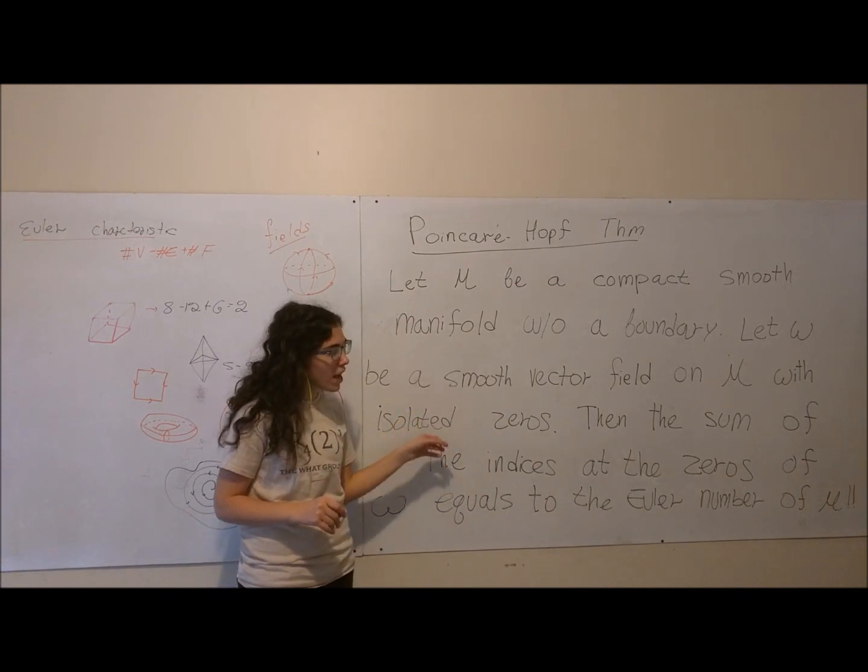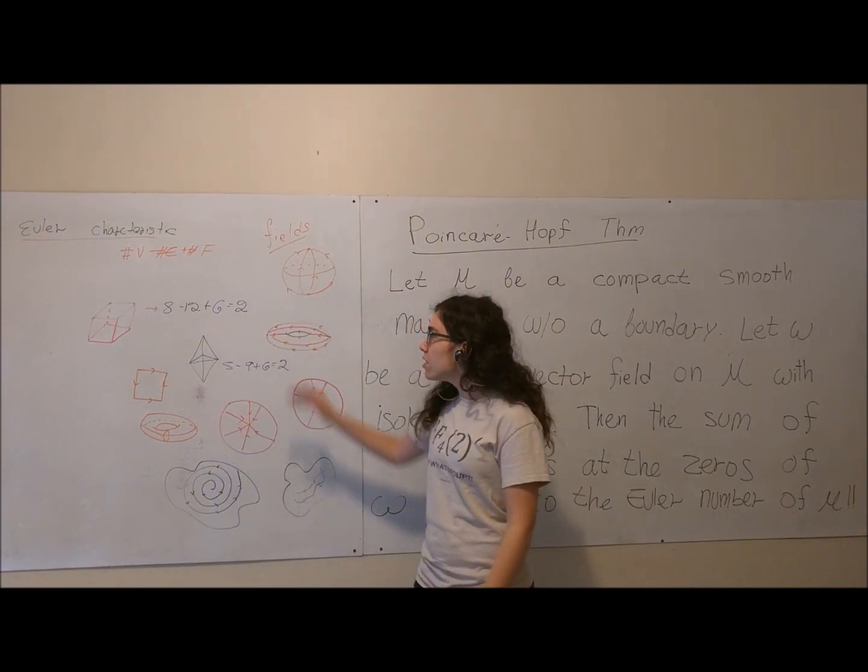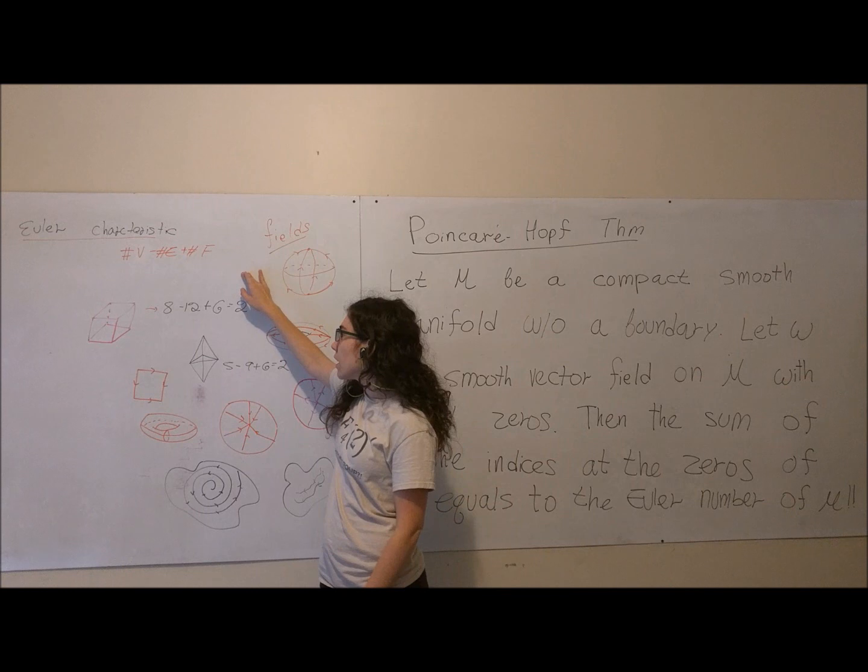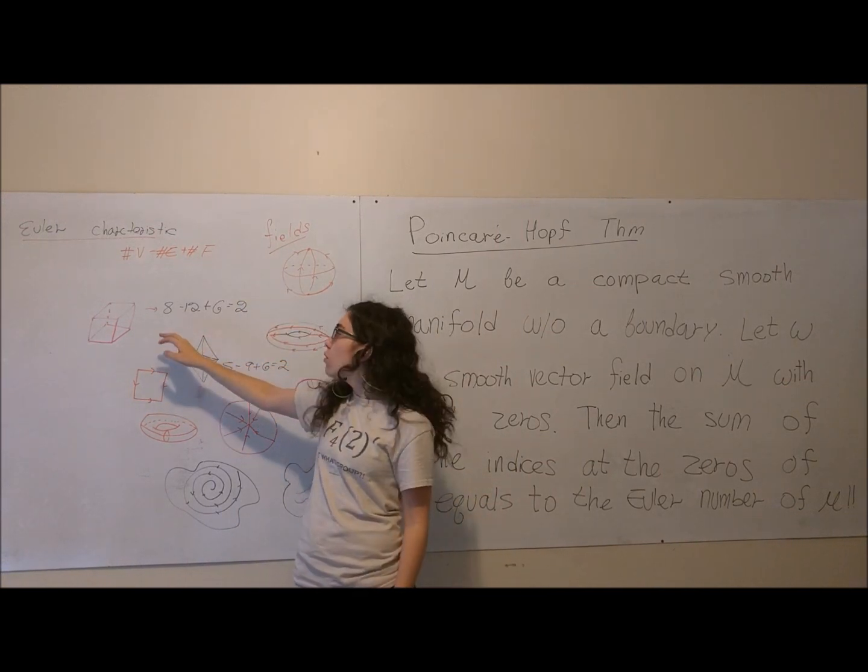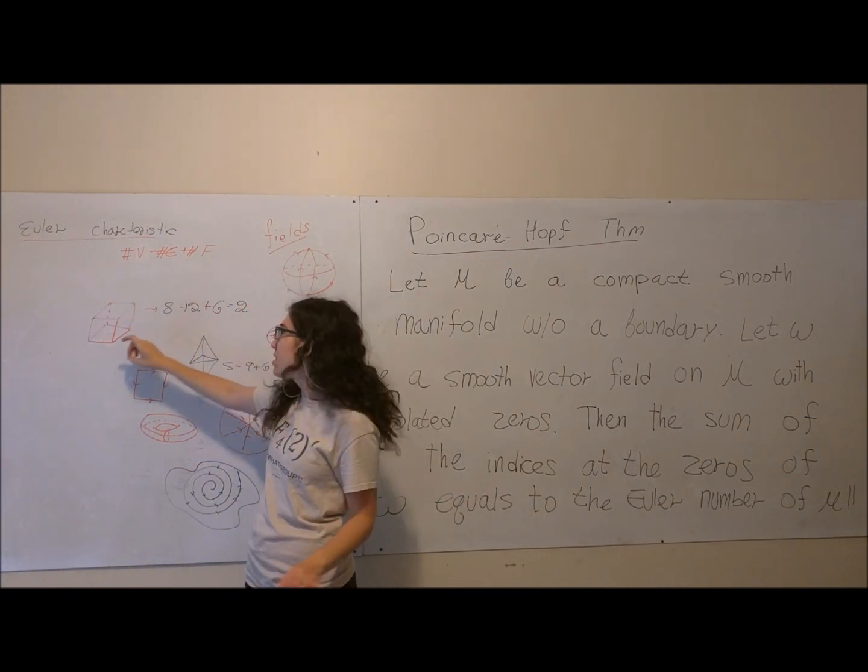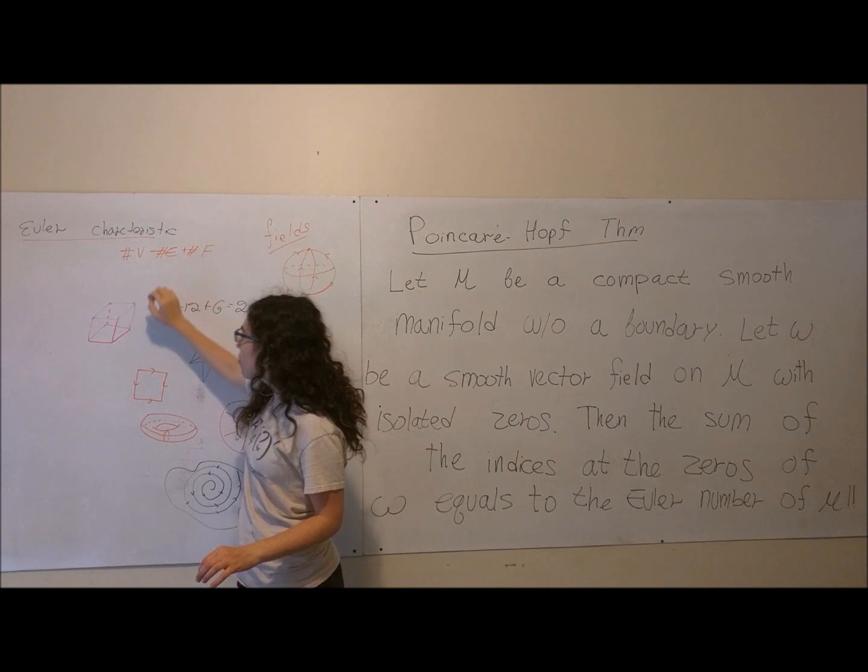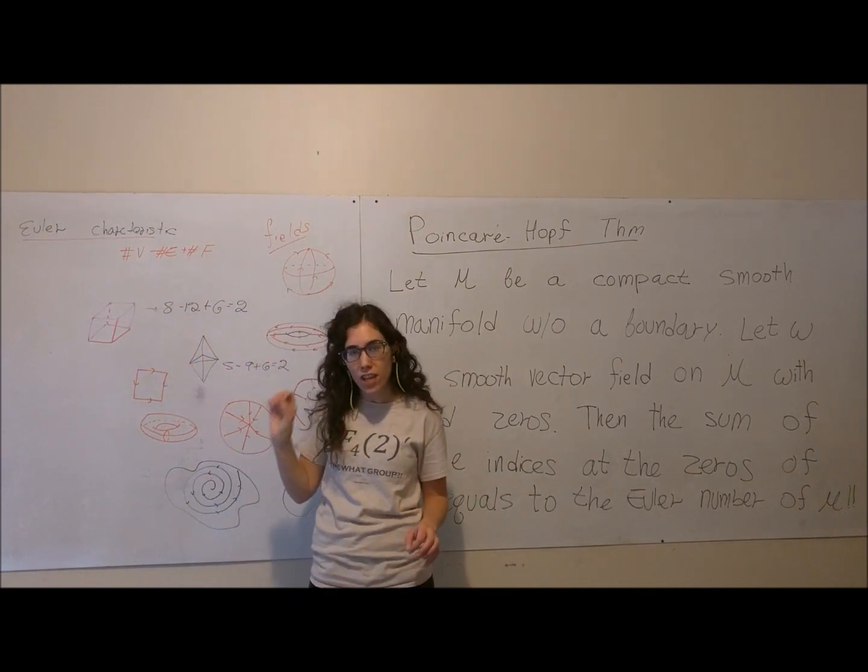In order to discuss the Poincaré-Hopf theorem, I have to introduce two notions. The first one is the Euler characteristic. In the case of 2D surfaces, what you do is you count the number of vertices, you subtract from it the number of edges, and you add to it the number of faces.